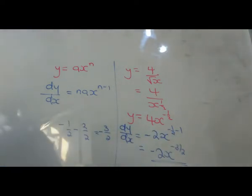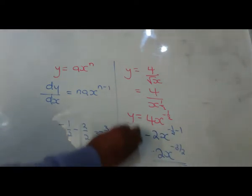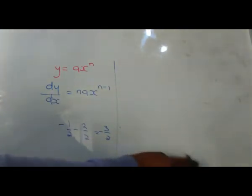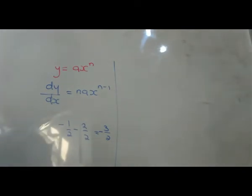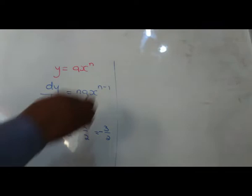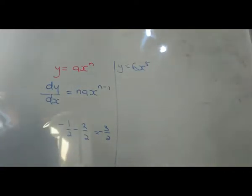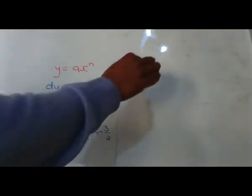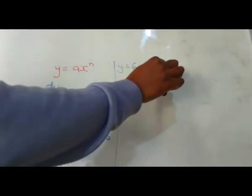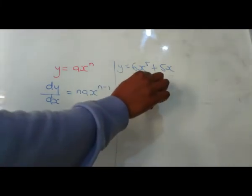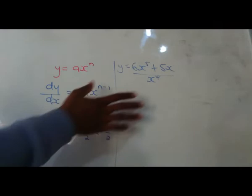Now let's do the last example before I give you work to do. The next thing now is y equals 6x to the power of 5 plus 5x all over 4x to the power of 4. So the first thing is to make this a non-fractional equation. How is that possible? We can divide by 4 throughout.